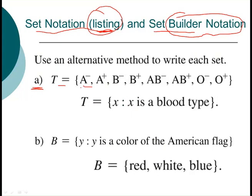So here we've got our first problem. This is just a list. This is a list of all the different blood types. So notice they are all listed out. And then down here we're saying, alright, well let's call it a variable X, and then we say X such that X is a blood type.